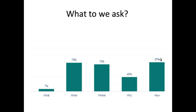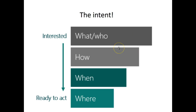What are people asking? It's the who, what, where, when, why, and how questions. We're asking things like when are the movies on, where can I go to buy something, why is the sky blue. It's important to understand these questions as they pertain to intent, particularly for lead generation or sales from your website. People's intent is much more refined when they get to 'where' and 'when' queries.